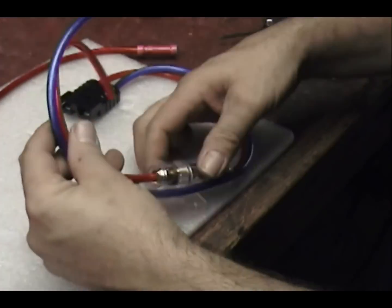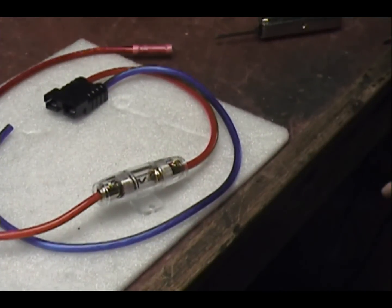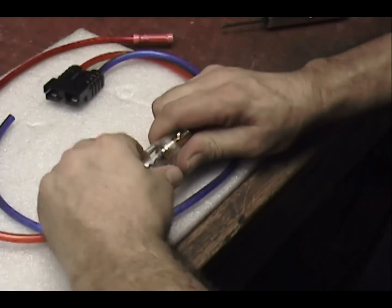First thing is, this fuse holder needs to be at the far end, it needs to be where the battery is, not over here where the radio is.